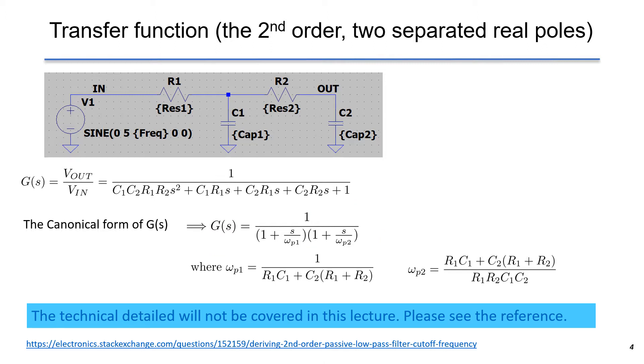The first pole is omega_p1, the second pole is omega_p2. Please check the reference for more detailed information.